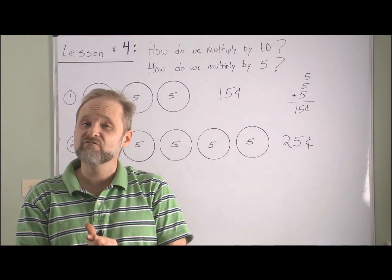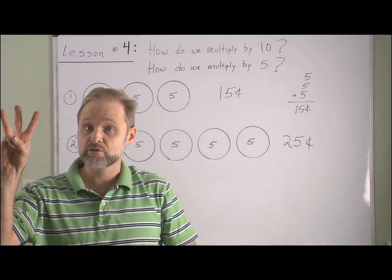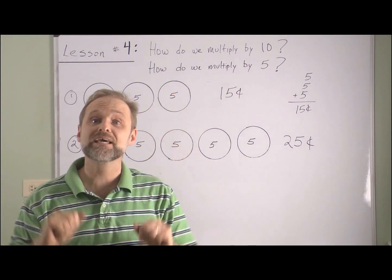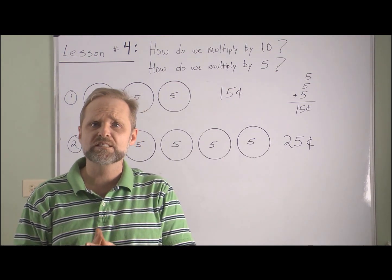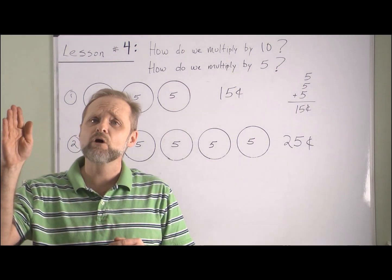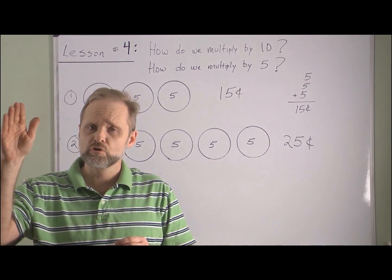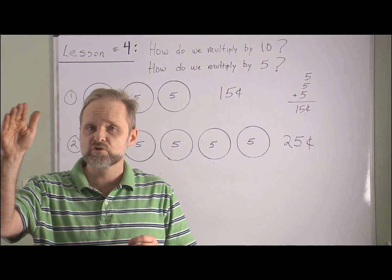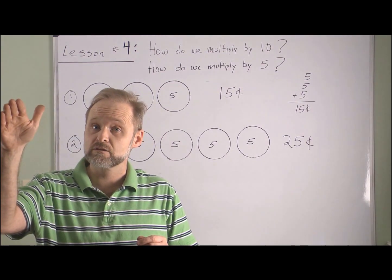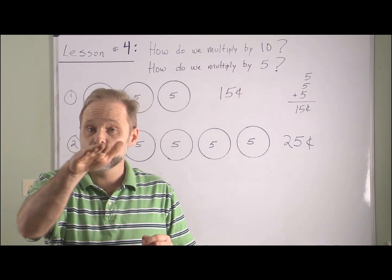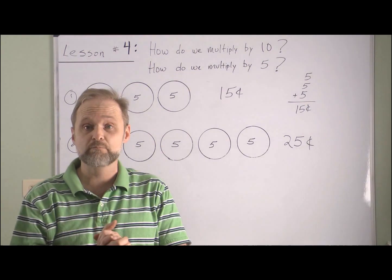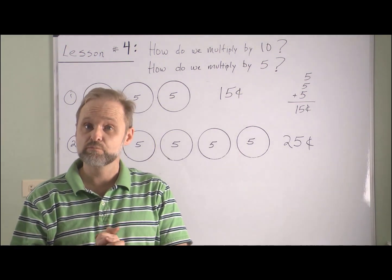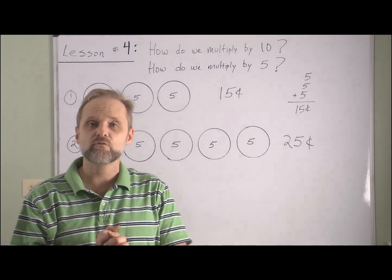Next time, in lesson number five, we're going to focus on multiplying by three — so that'll be skip counting by three — and also multiplying by nine, which means skip counting by nine. Something very helpful for skip counting by nine is to make sure you can count backwards from ten: ten, nine, eight, seven, six, five, four, three, two, one. Whatever digit you start at, you can go to the previous digits all the way down to one — that'll be very helpful with skip counting by nines. Now you should be all ready for the worksheet. Please give it your very best effort, and then lesson number five will be next.